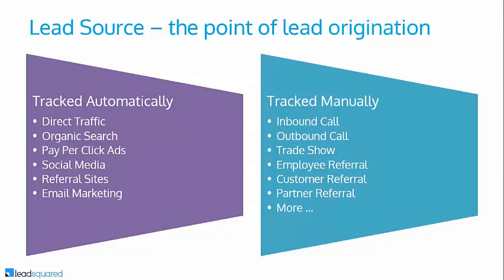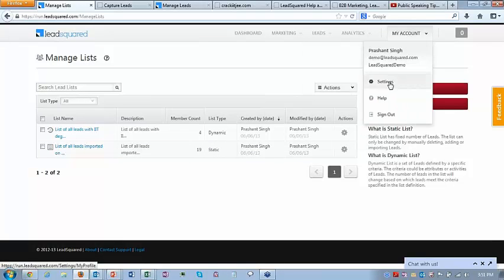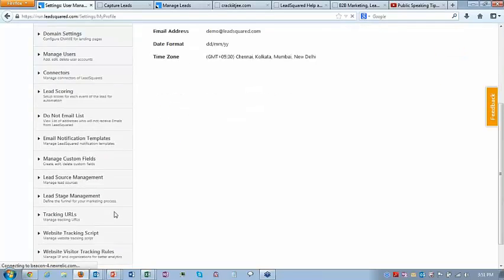Lead source is basically the point of lead origination — the place where the lead came from before it got captured in LeadSquared. Some lead sources are tracked automatically and some must be tracked manually. Lead sources tracked automatically include: direct traffic, organic search, pay-per-click ads, social media, referral sites, and email marketing. Lead sources tracked manually include: inbound call, outbound call, trade show, employee referral, and customer referral. These leads are typically added manually and you have to associate the source manually.